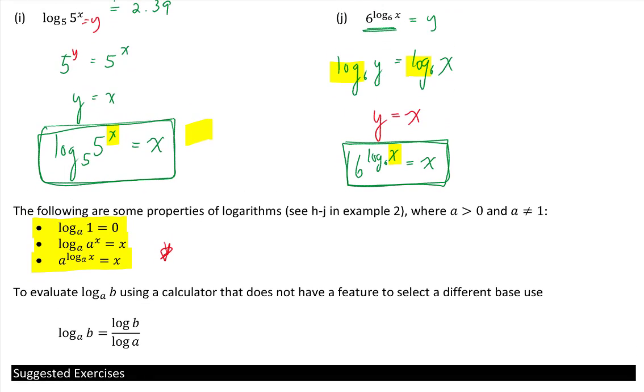Now we know how to evaluate logarithms with our calculator. If you want to evaluate log base a of b using a calculator that does not have a feature to select different bases, all you do is take the logarithm of b and divide it by the logarithm of a. Remember your calculator is in base 10.